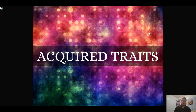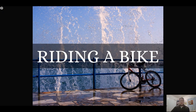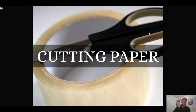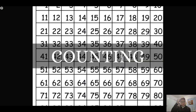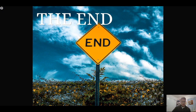Now, acquired traits. Acquired traits might not be part of heredity as we talk about it, but it's super important to make the distinction. We're going to keep encountering acquired traits that we might think are inherited, but through research and observation we find that an organism is not born with it — they learn it or get it from their environment. Examples: riding a bike — you are not born a good bike rider, you learn. Cutting paper is a skill you acquire. Counting is something we learn; we have the brain to do it, but the skill itself is acquired.